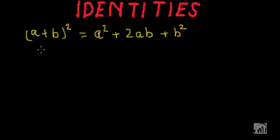Hi, today we will learn how this identity (a+b)² = a² + 2ab + b² can be understood geometrically.